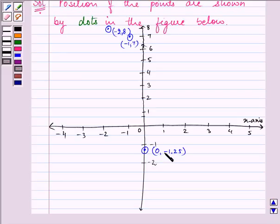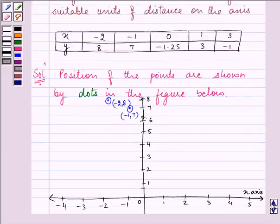Proceeding on further, the next point given to us is one and three. So one in the x axis and three in the y axis. So this point is (1, 3).